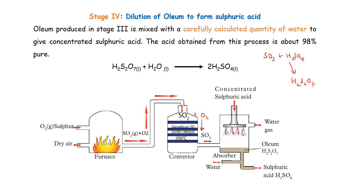Then, later on, we shall produce our oleum in which we shall now bring our calculated amount of water to come and interact with our oleum to later produce sulfuric acid. Please, you can pause the video and try to go through this diagram to see whether it is somehow making some sense.